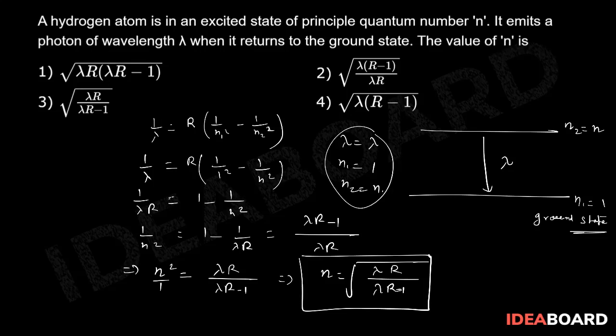This has to be the right choice. Let me check: lambda R upon lambda R minus 1. Yes, we have option number 3 which should be the right choice.